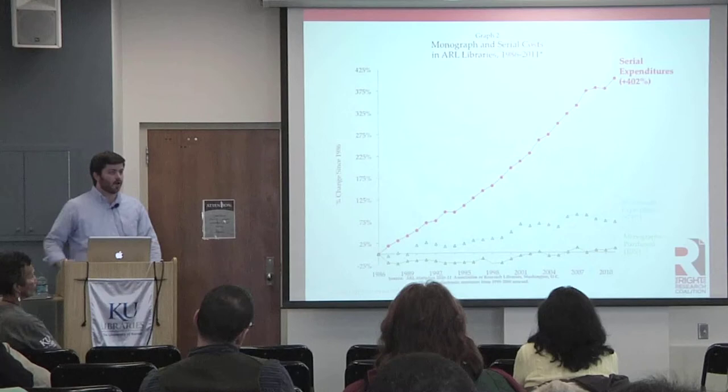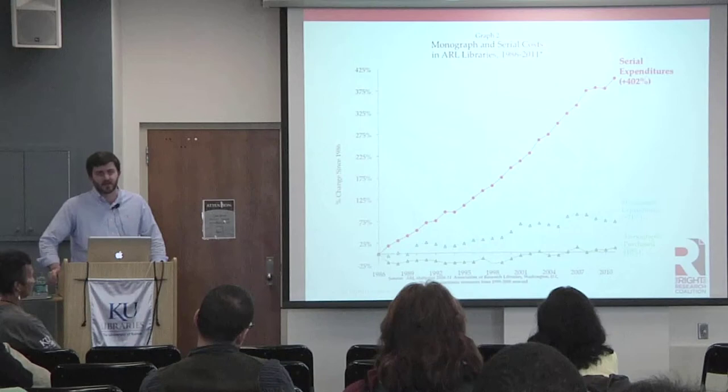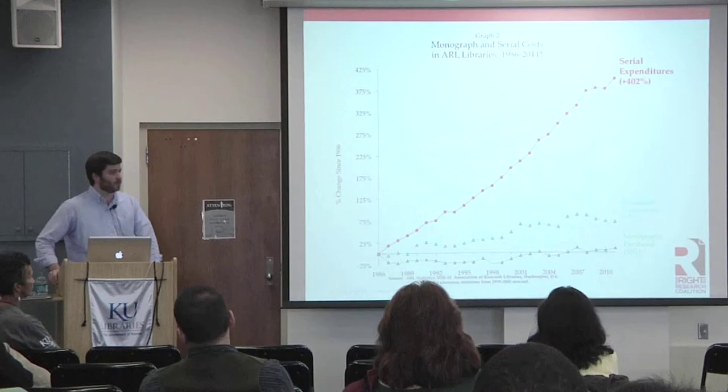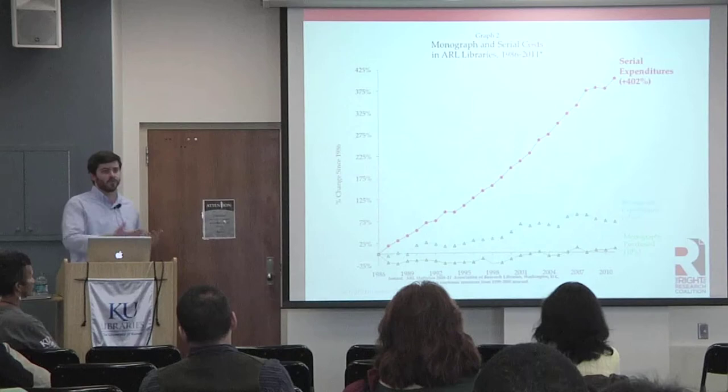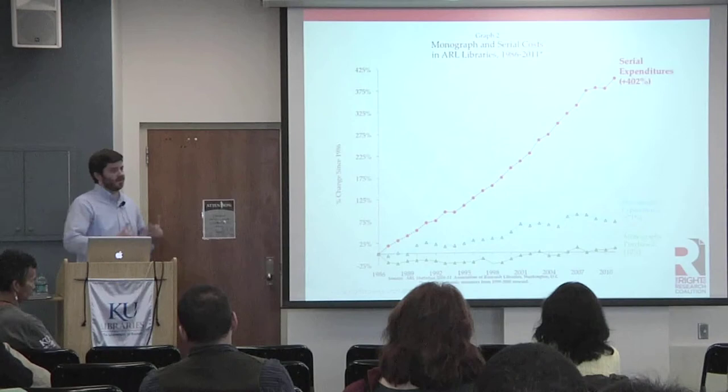That puts a lot of strain on library budgets and prevents them from spending money on lots of other things beyond journal subscriptions. The number of monographs or books purchased has barely increased at all over this 25-year time frame. So even if you're in a discipline where journals might not be as expensive as in medicine or physics or chemistry, this deeply affects libraries' ability to buy monographs. If you're in a social sciences or humanities discipline where you really want to be publishing monographs, this harms the library's ability to buy them, which then decreases demand and your ability to publish them.